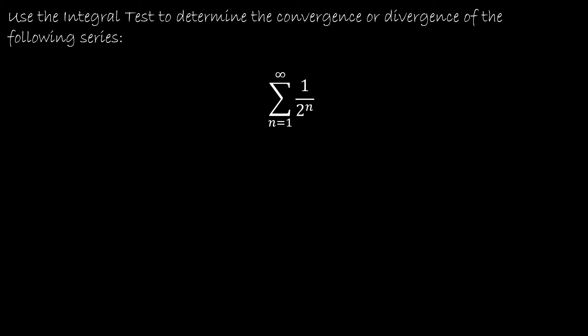Let's take a look at another example. We're to use the integral test to determine the convergence or divergence of the summation as n goes from 1 to infinity of 1 over 2ⁿ. We need to check the three conditions. First, is it positive? Thinking of f(x) = 1/2ˣ: for x ≥ 1, we get 1/2, 1/4, 1/8, and so on — all positive — so f(x) > 0.